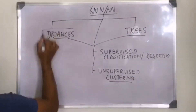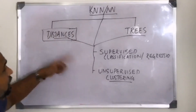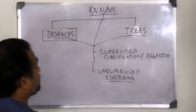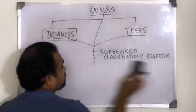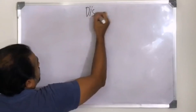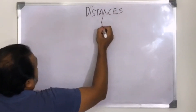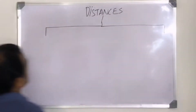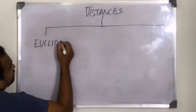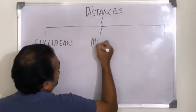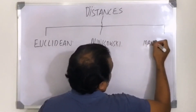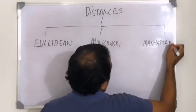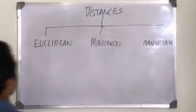In this particular video we're going to talk about distances in detail. In KNN, at least three different types of distances are used: one is Euclidean distance, then there is something called Minkowski distance, and there is also Manhattan distance. The name Manhattan came from Manhattan in the US — there's an example to it that we'll talk about in detail.